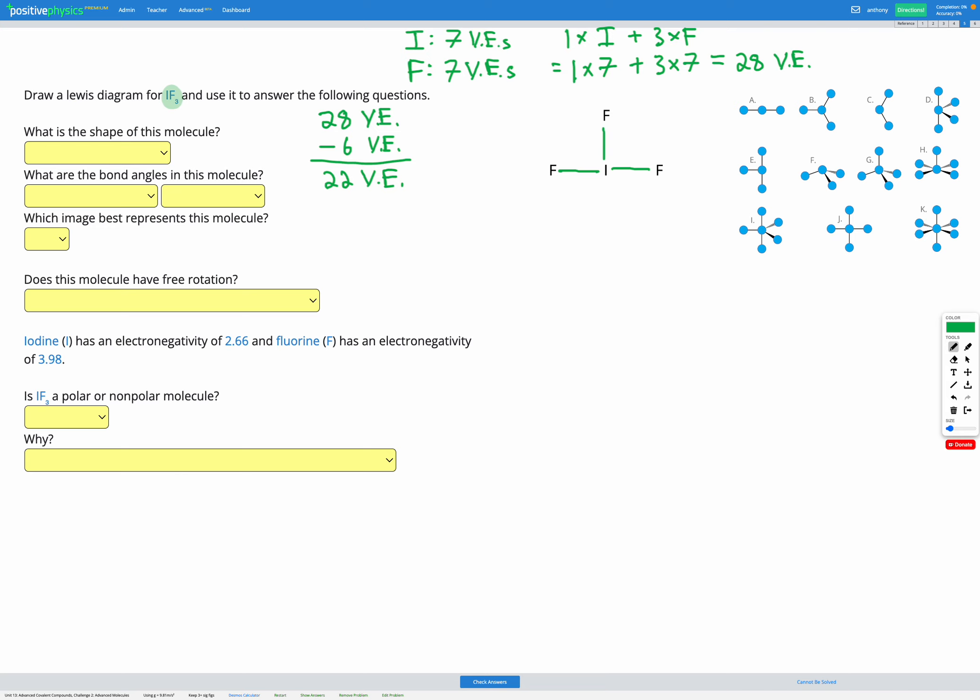My next step is to add electrons on the terminal or outer atoms until I've used up all my valence electrons. So I'm going to add some on this fluorine to give it a full octet. That's 1, 2, 3, 4, 5, 6 electrons added there. I'm going to add 6 more on this fluorine and 6 more on this fluorine. So that's 6 electrons added to 3 fluorine atoms, a total of 18 valence electrons used up, leaving me with 4 valence electrons remaining.